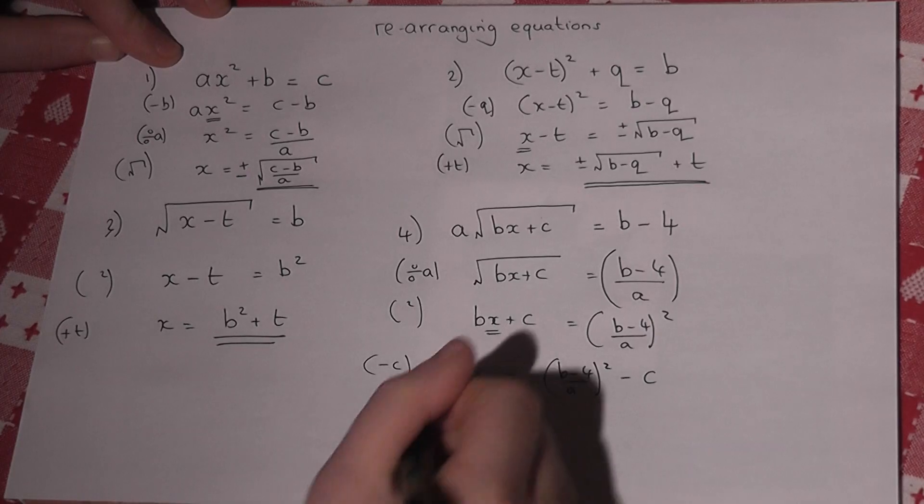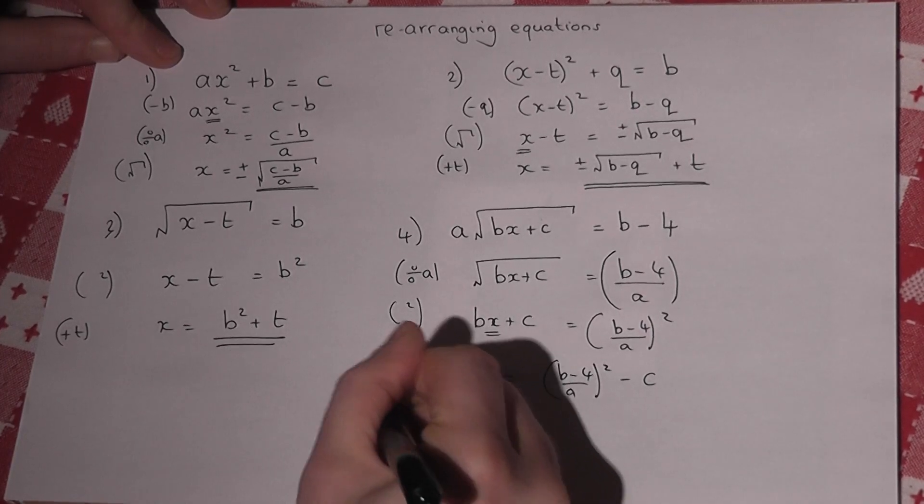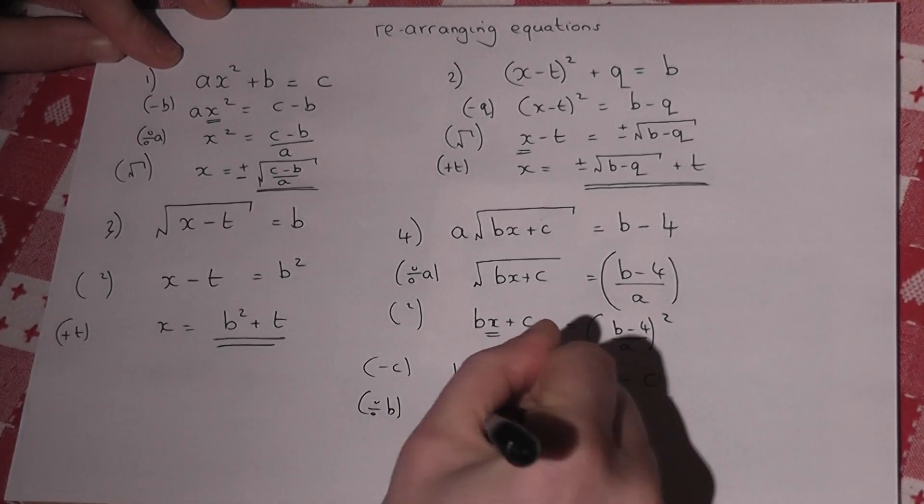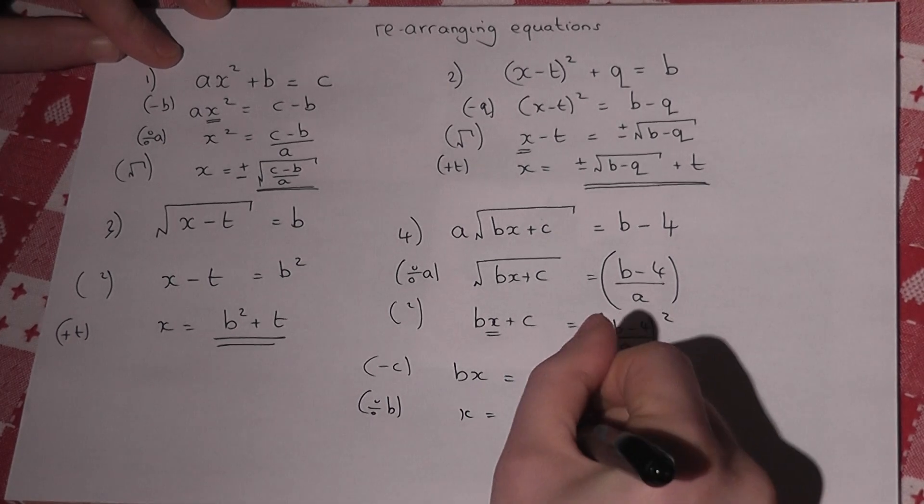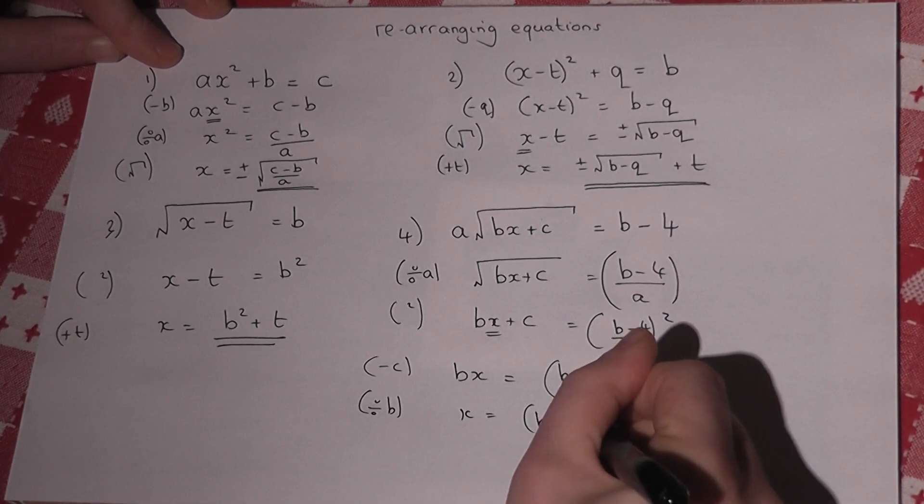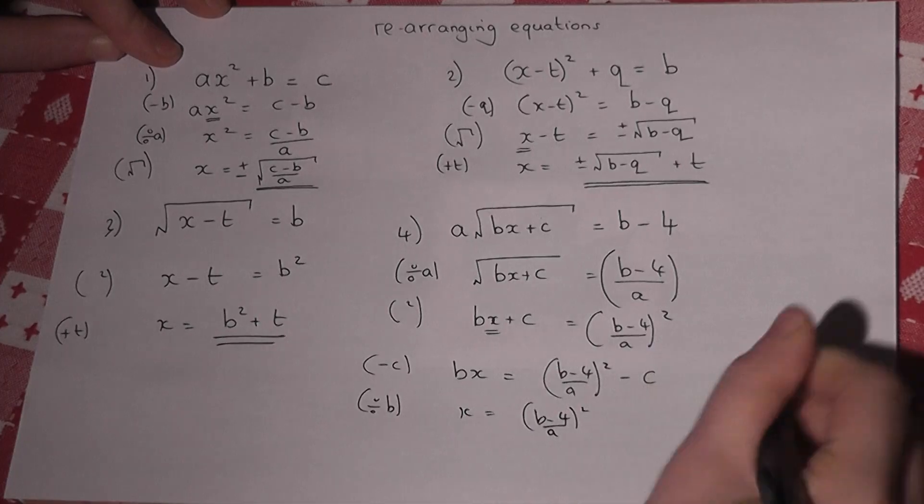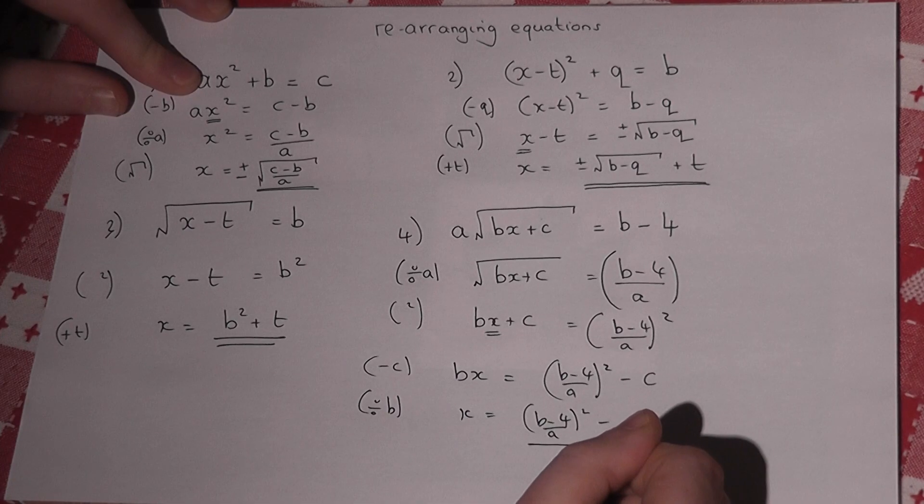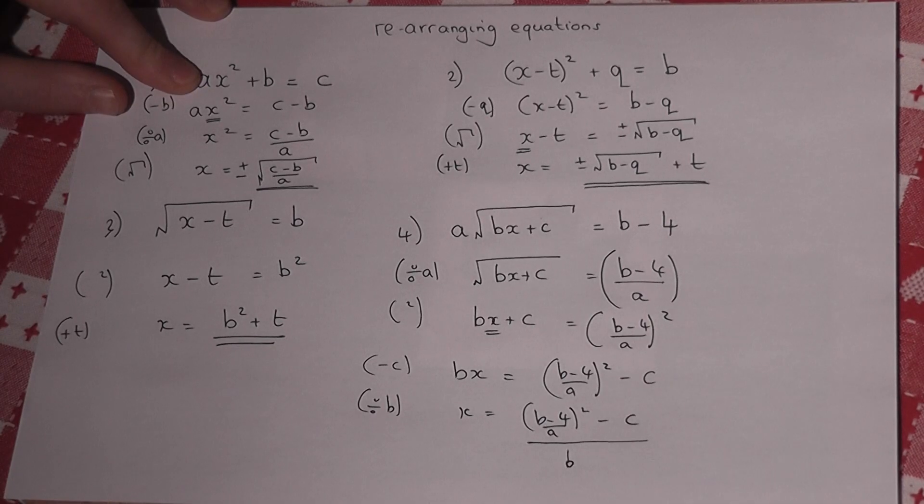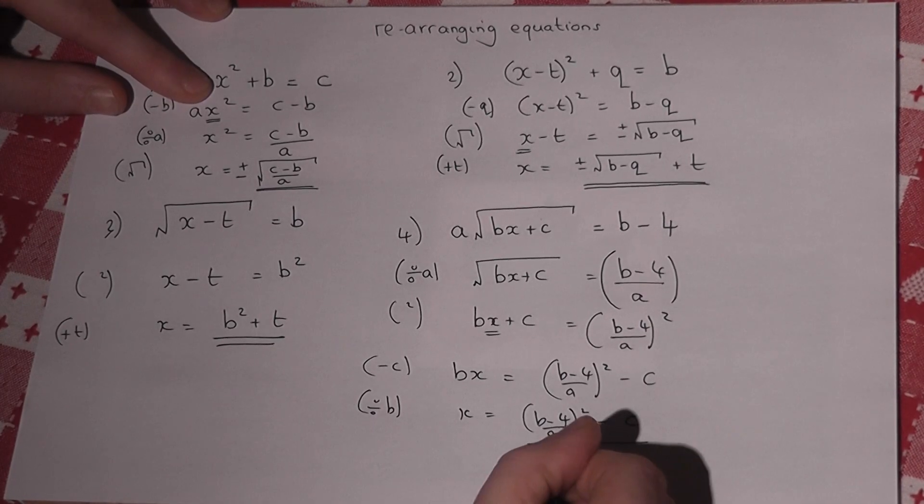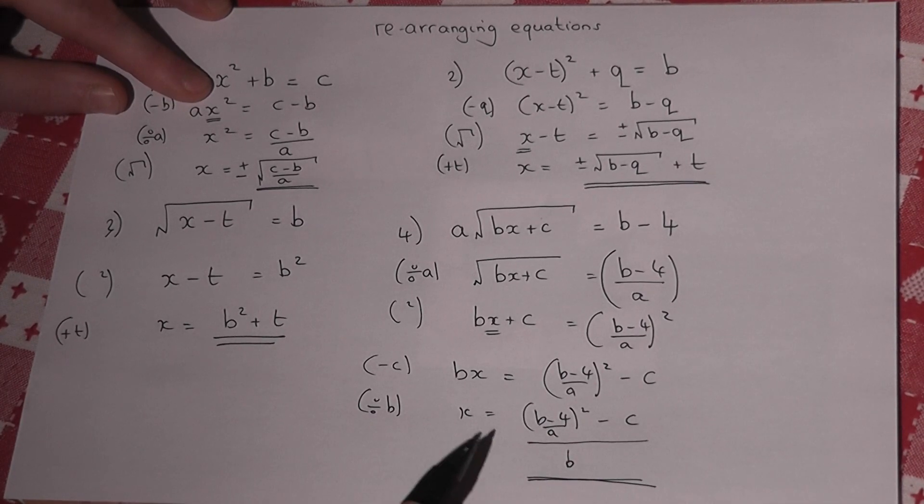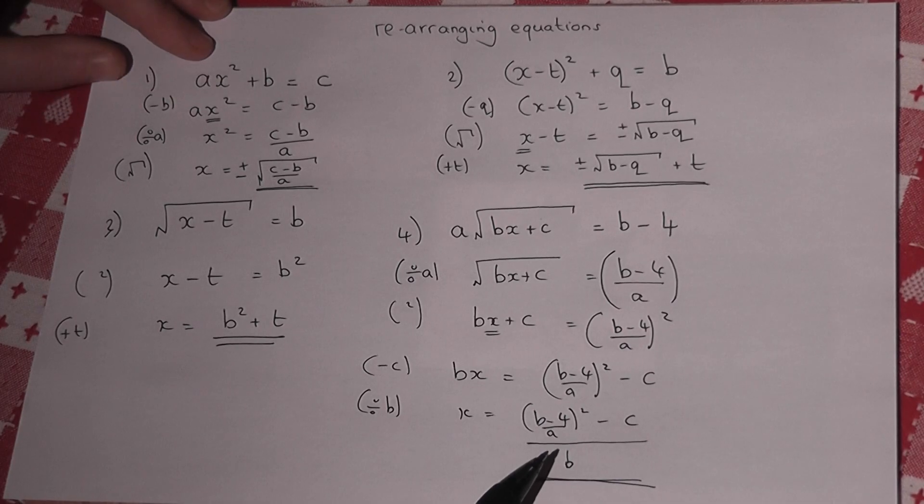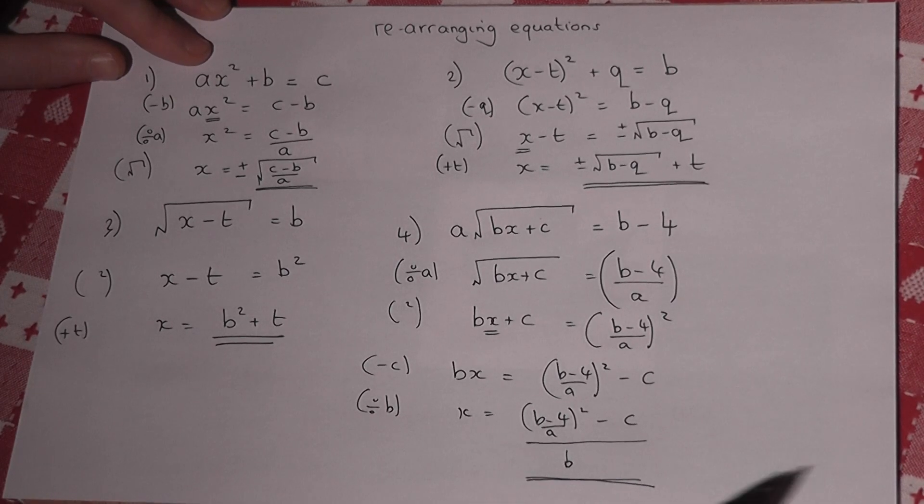And to finish off, I divide by the b. So x equals that entire thing, b minus 4 squared over a, take away c, all over b. That's a pretty messy answer. And in a future video, we'll look at how to make these sort of fractions more simple. But that will be sufficient for the moment.